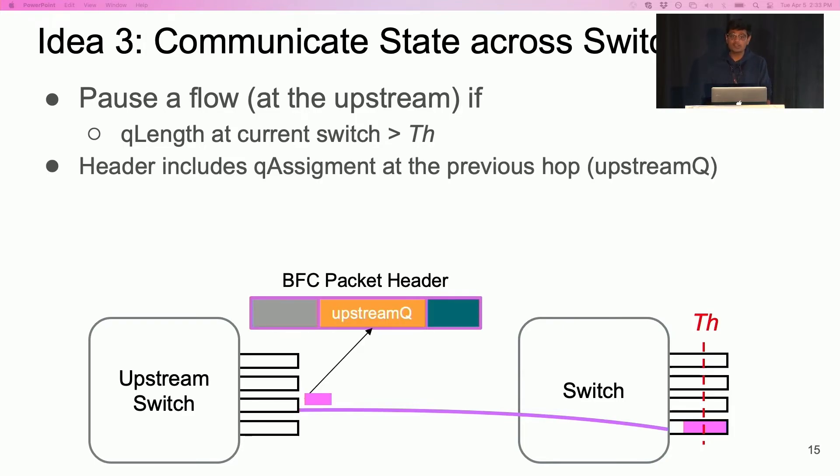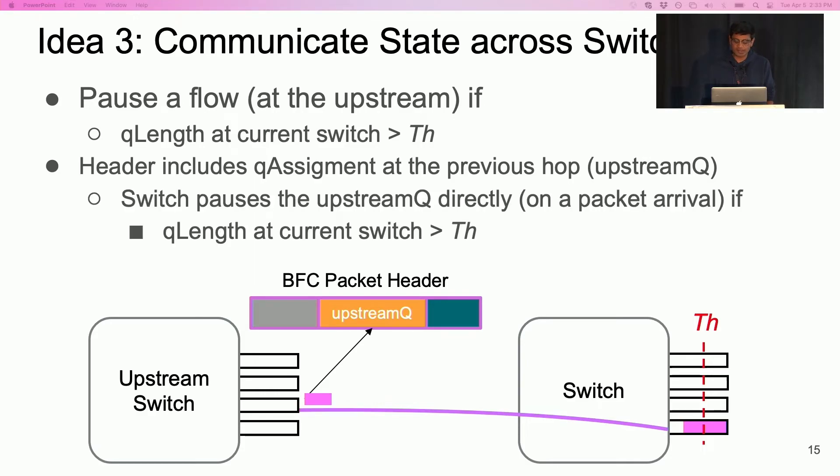In BFC, each switch marks a packet header with the current queue assignment at the egress. The subsequent switch thus knows the queue assignment at the previous hop. If the queue occupancy at the switch for an incoming packet exceeds the pause threshold, the switch simply pauses the upstream queue corresponding to the packet.